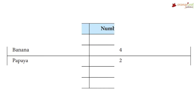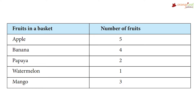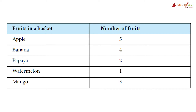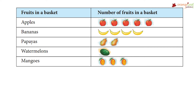A pictograph or picture graph uses symbols to represent information. Have a look at this table — it gives us the information of the fruits in a basket. We have five apples, four bananas, two papayas, one watermelon, and three mangoes. Now let's represent this same information in the form of a pictograph and answer the given questions.